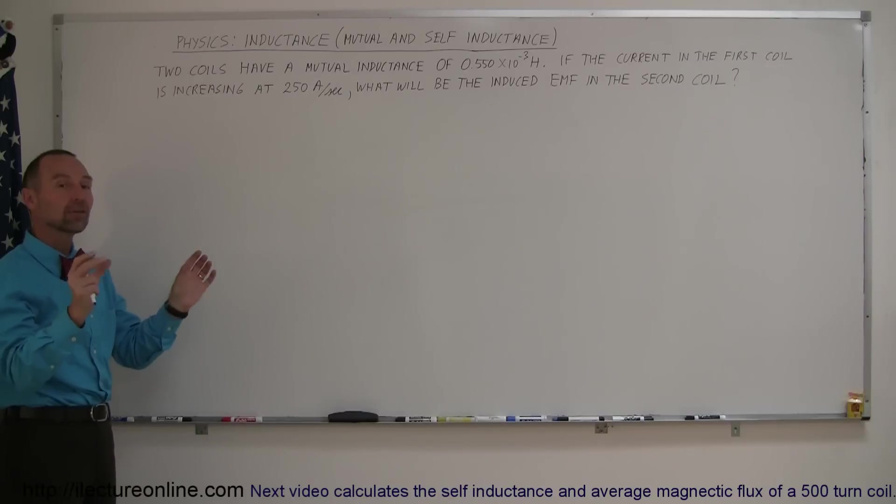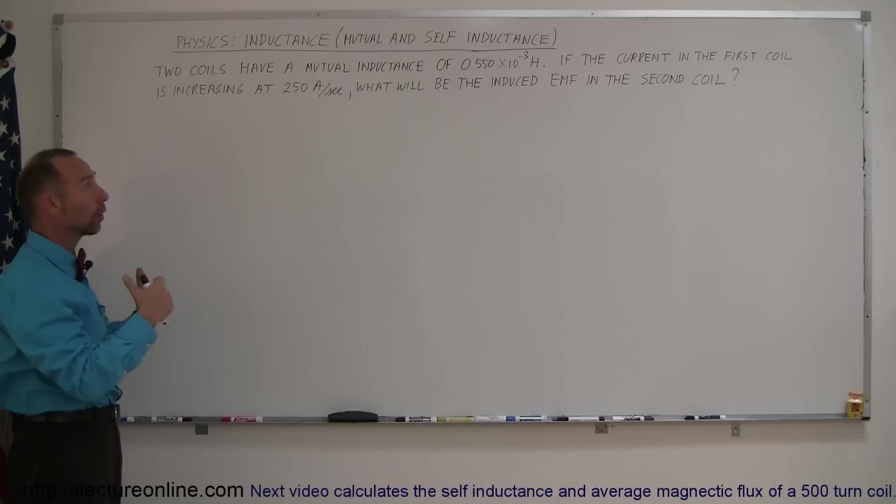Now, mutual inductance is the inductance between two coils. Self-inductance is the inductance caused by one coil on itself.